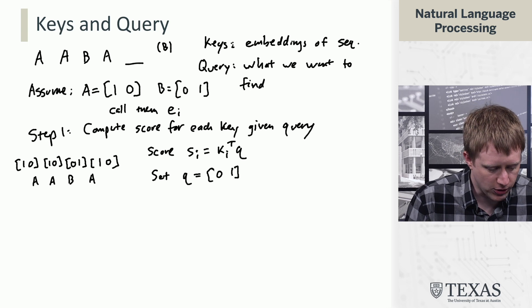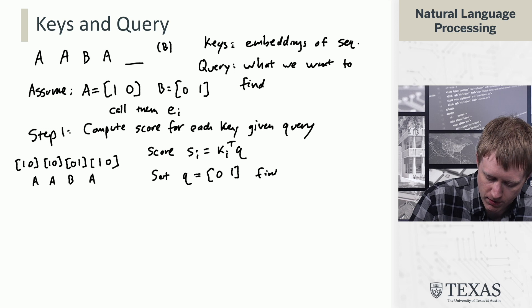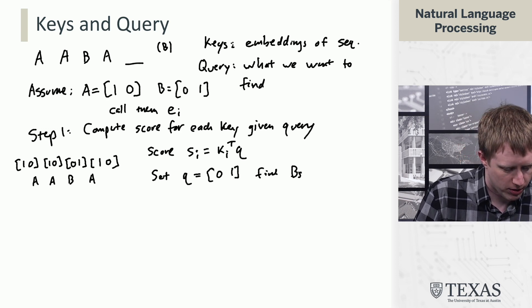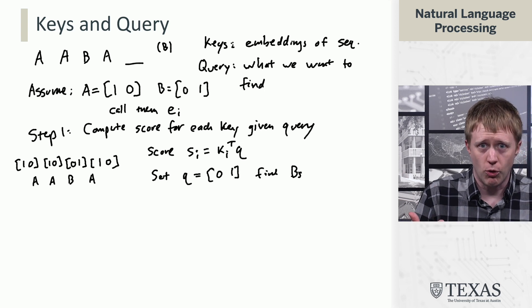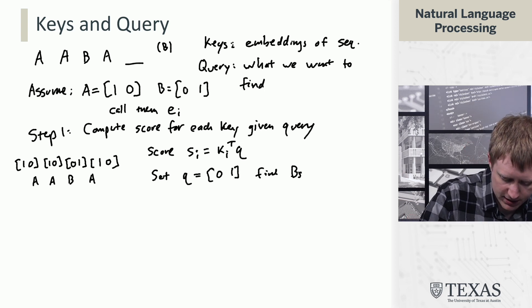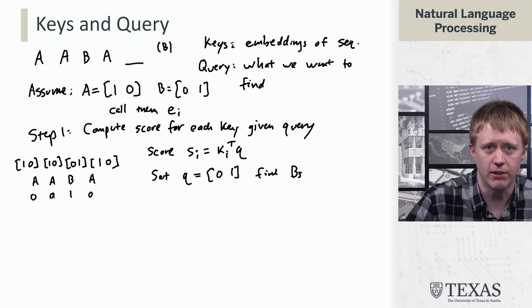And what that's going to do is that's going to allow us to basically find Bs. So, that's what the scores here are going to do. And so, if we go through and take the dot product, we get the scores 0, 0, 1, and 0, like this.